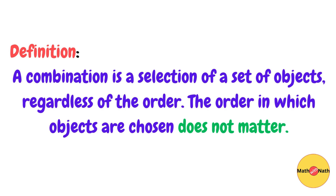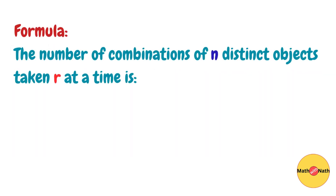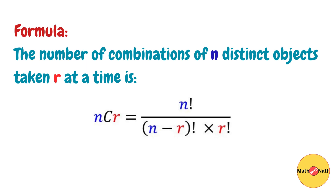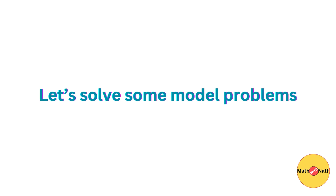A combination is a selection of a set of objects regardless of the order; the order in which objects are chosen does not matter. Therefore, the number of combinations of n distinct objects taken r at a time is given by nCr, which equals n factorial over (n minus r) factorial times r factorial.